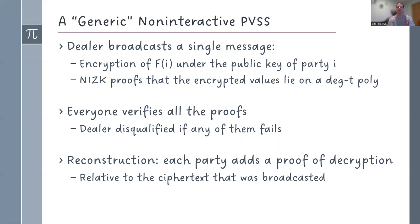So this is a single message. Everybody can verify all the proofs. If the dealer cheats in any of them, it gets disqualified, and then the honest parties can choose some kind of a default value, maybe the zero polynomial or what have you.